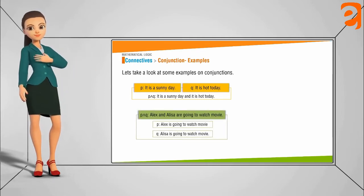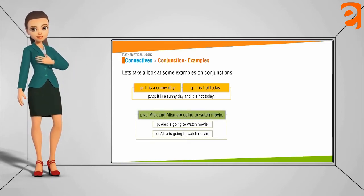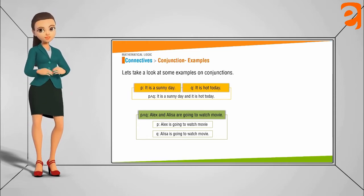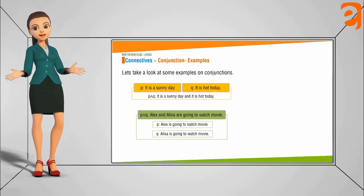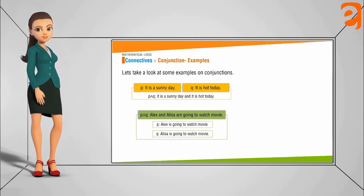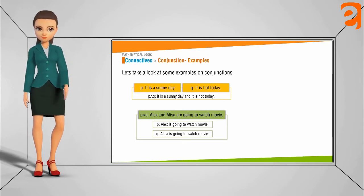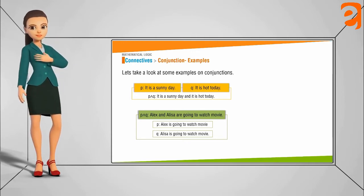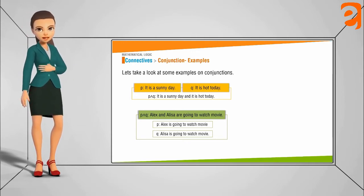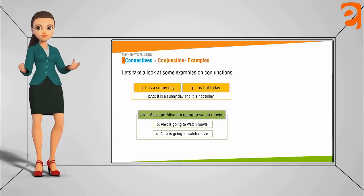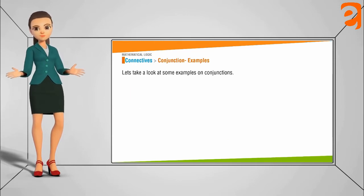Similarly, take the statements: 'Alex is going to watch a movie' and 'Alisa is going to watch a movie.' We combine these two statements with the word 'and' and it comes out to be: 'Alex and Alisa are going to watch a movie.'